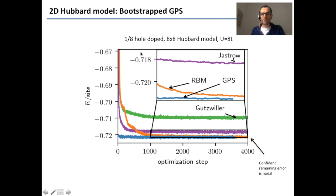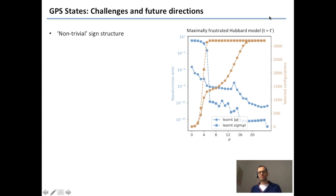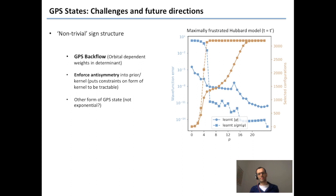We can go to a much more complicated model: the 8-hole-doped 8×8 Hubbard model, which has strong long-range order and competing low-energy phases. Again, the Gaussian process state does better than both Gutzwiller and Jastrow, and slightly better than the RBM — but they're essentially the same — and we're confident the remaining error is in the nodal restrictions. Obtaining the sign structure and nodal structure of frustrated and non-trivial fermionic models is very difficult for both GPS states and neural network states. We're working on this with ideas of backflow, as well as enforcing anti-symmetry as prior information in the statistical framework.